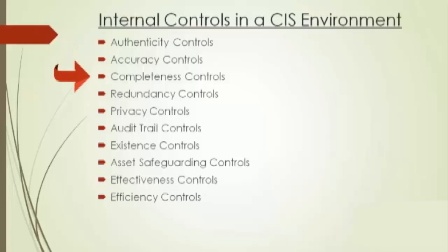Next comes completeness control. As the name suggests, completeness control checks whether all required data was provided in completeness. It basically attempts to ensure that no data is missing and that all processing is carried out through its proper conclusion. A program validation check is also one of the tools that helps with completeness control.